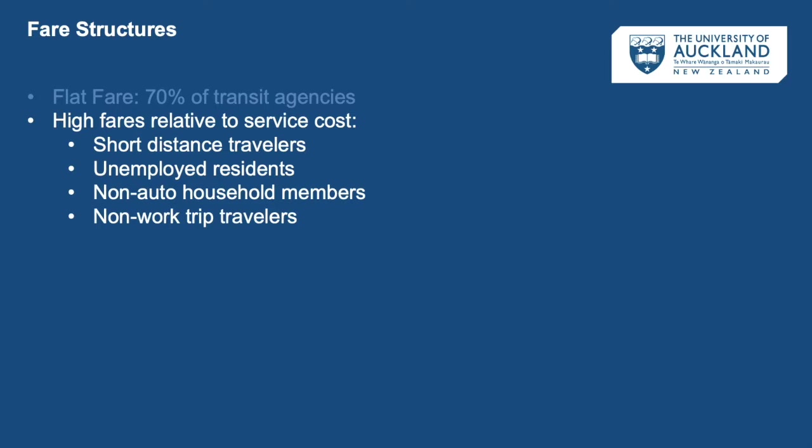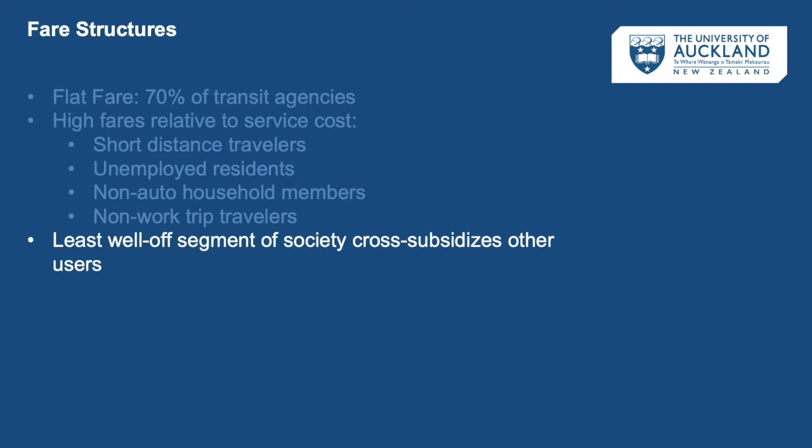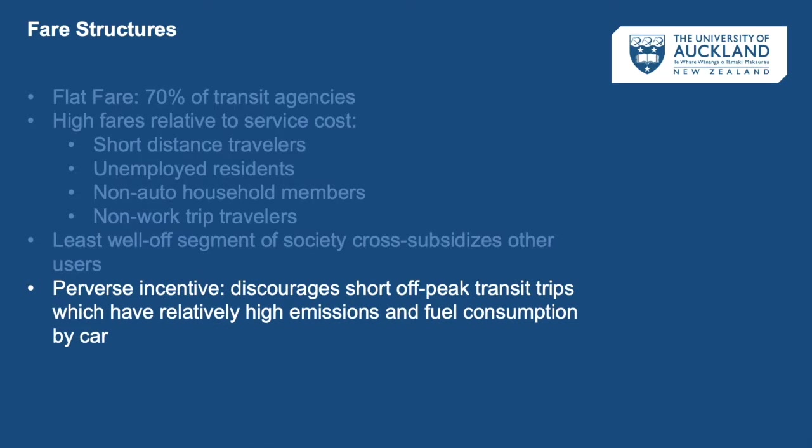Fares collected from a commuter are typically lower per mile than those traveling in off-peak hours, but unemployed riders typically travel in those off-peak hours. Household members without access to an automobile often take many short trips in addition to longer commute trips, meaning those shorter trips subsidize the longer commute trips. Non-work travelers — those going a few stops to get groceries or meet a friend — are paying more per transit mile than commuters.